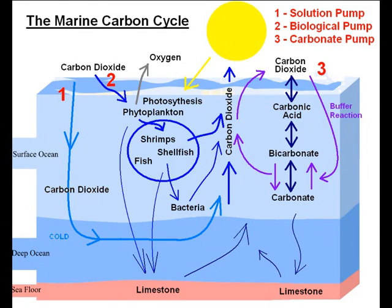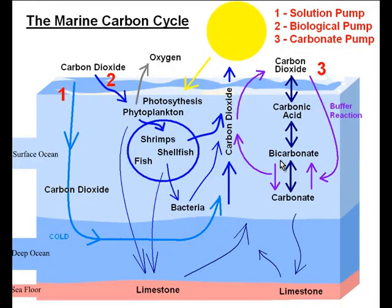If you could see carbon dioxide, you would see carbon dioxide going into the oceans, and about the same amount of carbon dioxide coming out of the oceans. But actually the marine carbon cycle is much more complicated than that, and it's made up of three different parts. The first part is called the solution pump, the second part is called the biological pump, and the third part is called the carbonate pump. These three pumps are cycles in their own right — they are separate cycles, but they do interact with each other as well.